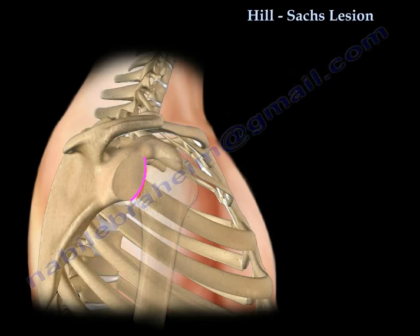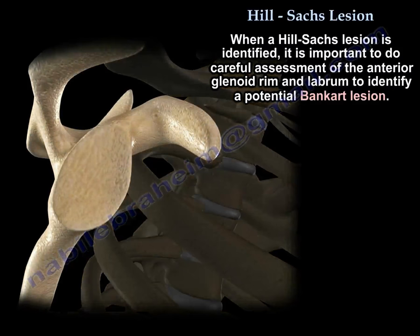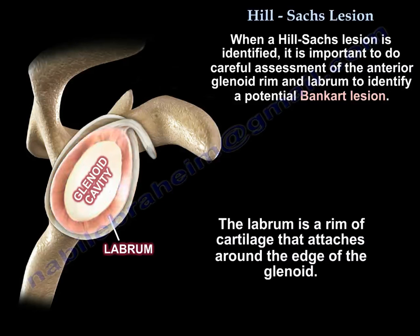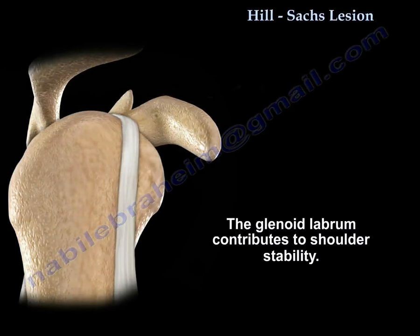When a Hill-Sachs lesion is identified, it is important to search and look for anterior glenoid rim and labrum pathology to identify a potential Bankart lesion. The labrum is a rim of cartilage that attaches around the edges of the glenoid, and this glenoid labrum contributes to shoulder stability.